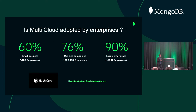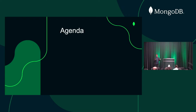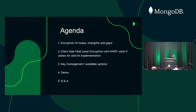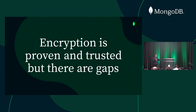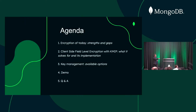The agenda for today: we're going to talk about encryption today — what do you have and what are the gaps. We're going to talk about client-side field-level encryption using KMIP. We'll also talk about key management options — local keys, KMS, and KMIP — and then I'm going to do a demo, and if there's time, some questions and frequently asked questions.